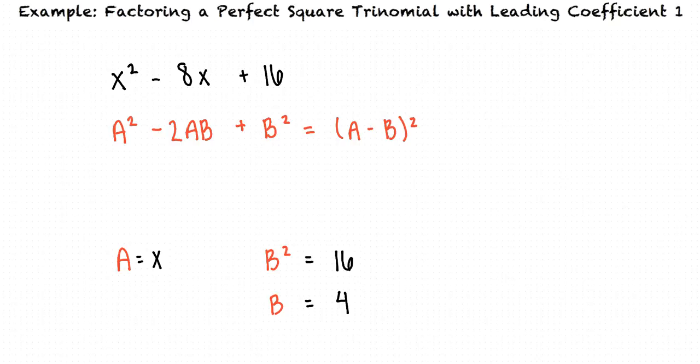Writing our given trinomial as a squared minus 2ab plus b squared with a equals x and b equals 4, we have x squared minus 2 times x times 4 plus 4 squared.